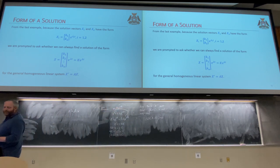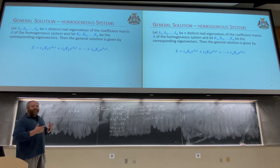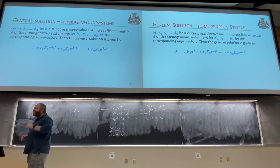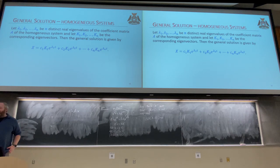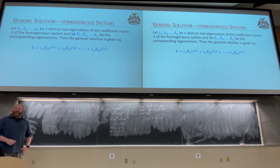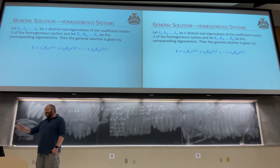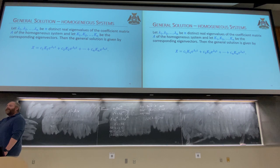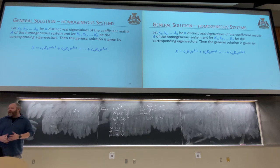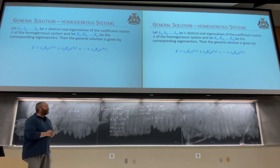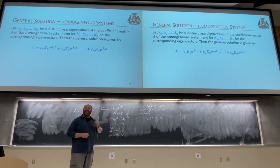This gives us our general solution. We're only doing n = 2, so we need two linearly independent solutions, but this scales up to n. In general, for n distinct real eigenvalues of the coefficient matrix A of the homogeneous system, with k₁ through kₙ being corresponding eigenvectors, the general solution is x = c₁·k₁·e^(λ₁t) + c₂·k₂·e^(λ₂t) + … and so forth. For us it's only the first two terms, but this holds for any number n. That's our goal: given a matrix, find eigenvalues and eigenvectors to form the general solution.